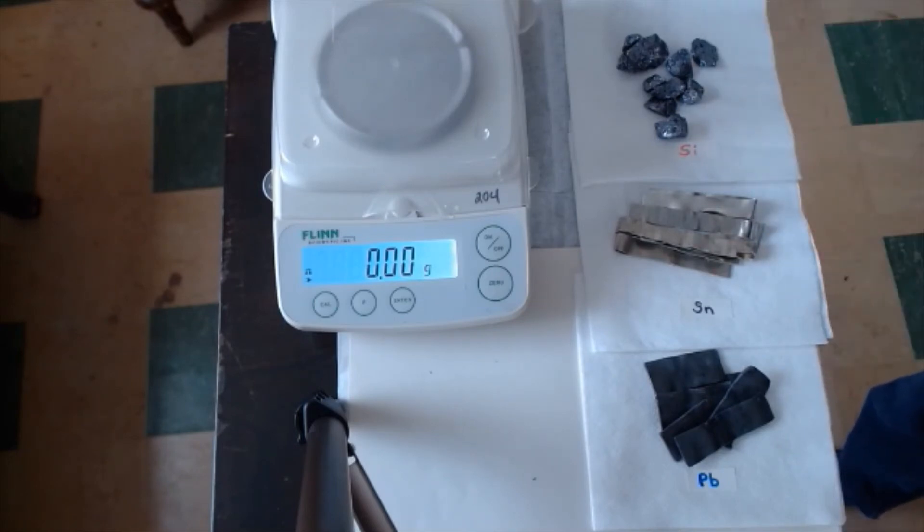The next step will be to look up the period number for each of these elements, because again, we're trying to find a pattern on the periodic table, so you need to be able to place these elements on the periodic table. They are all in group 14, which is also called the carbon group, because carbon's at the top. So they're going to be in different periods, so just check your periodic table, and then fill in the period number for each element that we tested.